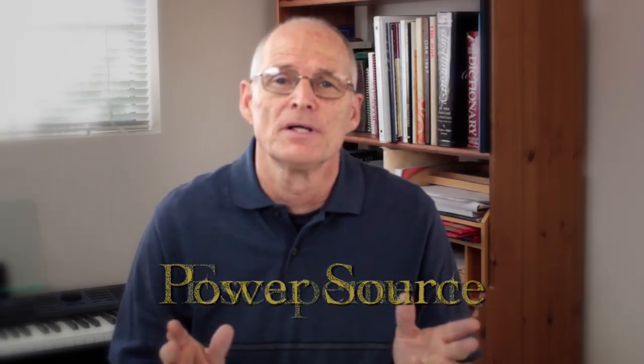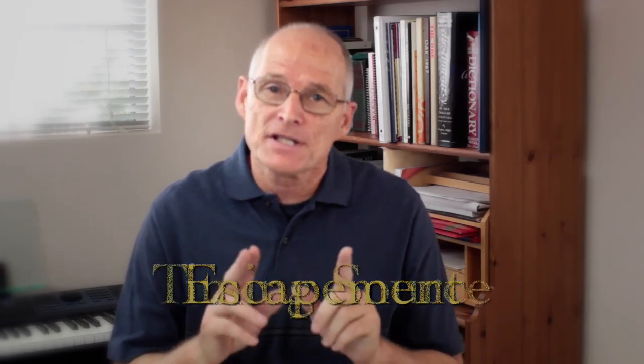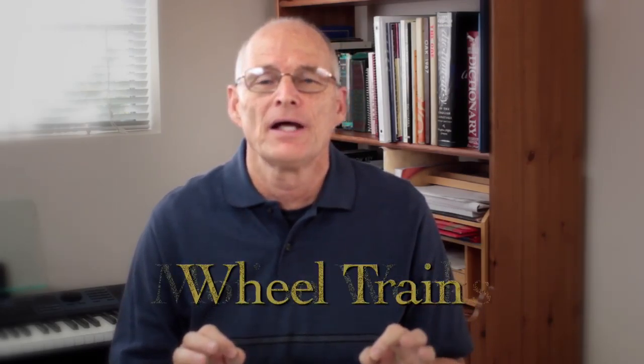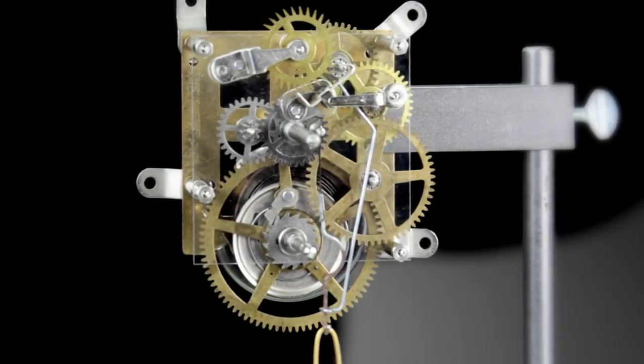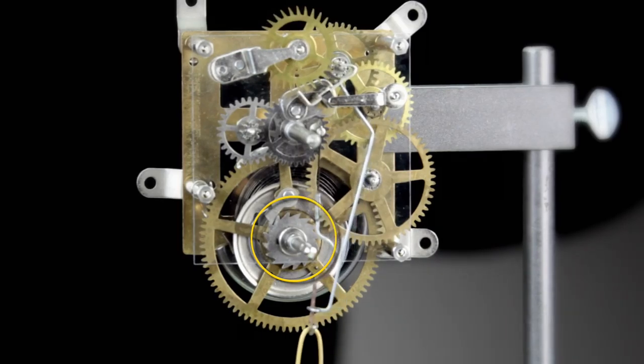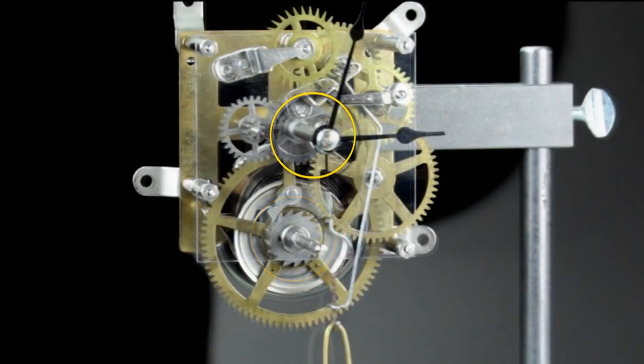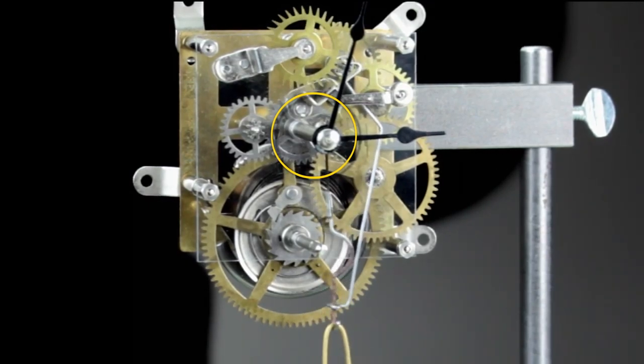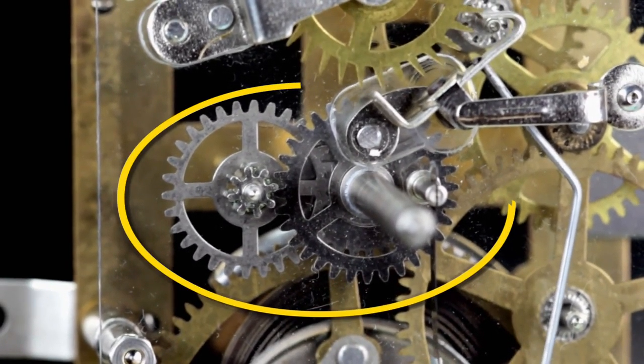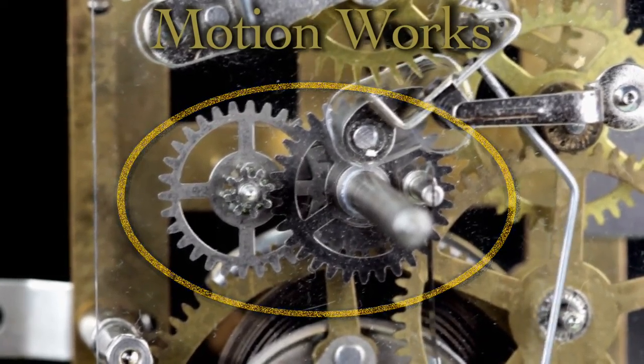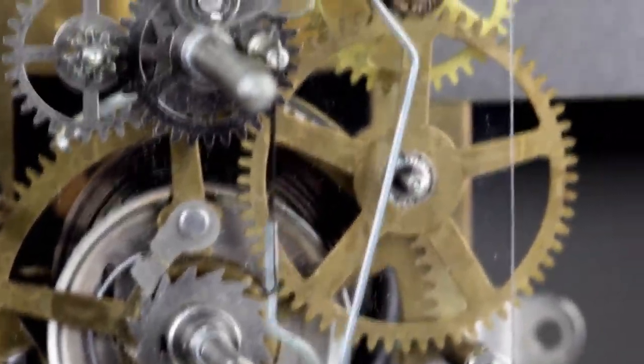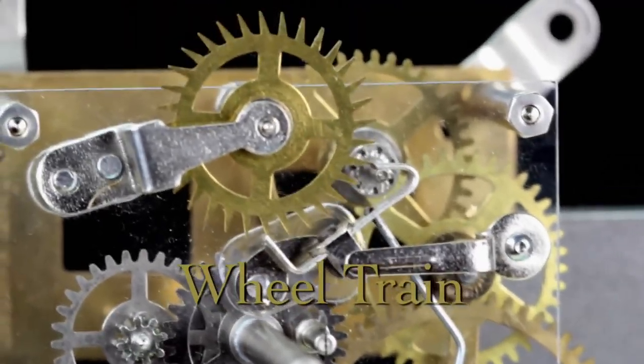The complete train is made up of five major building blocks: the power source, the escapement, the timing source, the wheel train, and the motion works. Here we're looking at the front of the clock movement. The square winding arbor is facing forward, as is the center arbor where the hands of the clock are attached. Associated with the center arbor is a special set of wheels and pinions called the motion works. The gears curving around the center arbor to the right make up the wheel train.